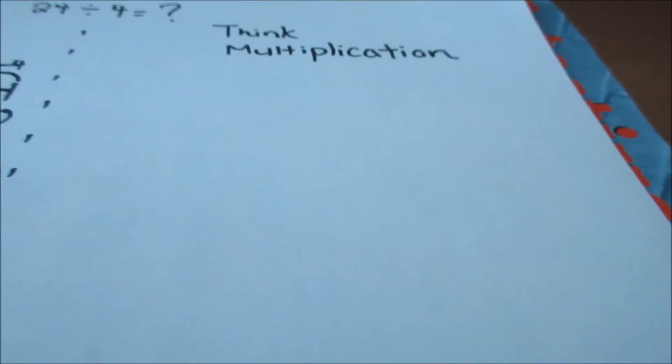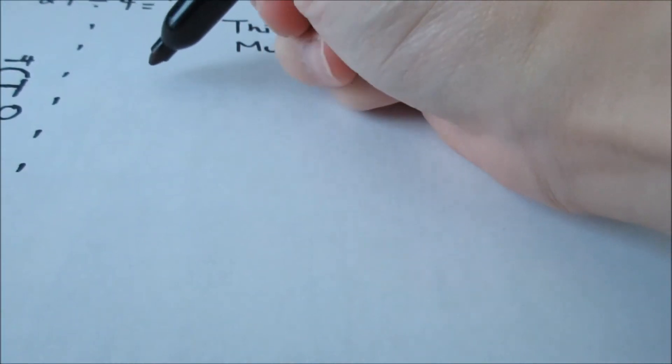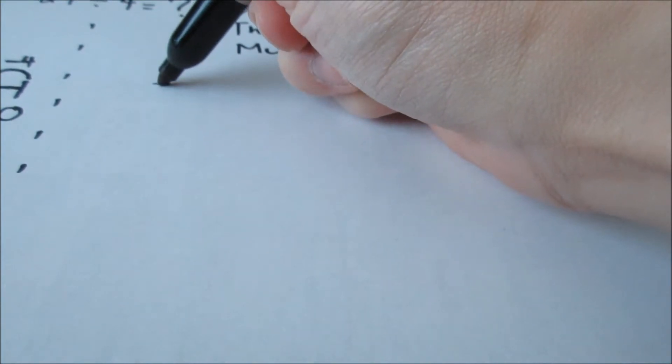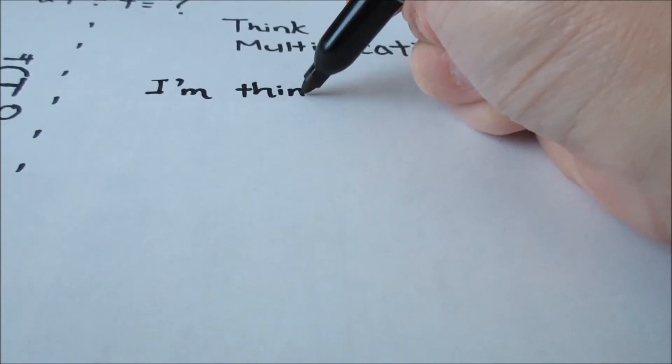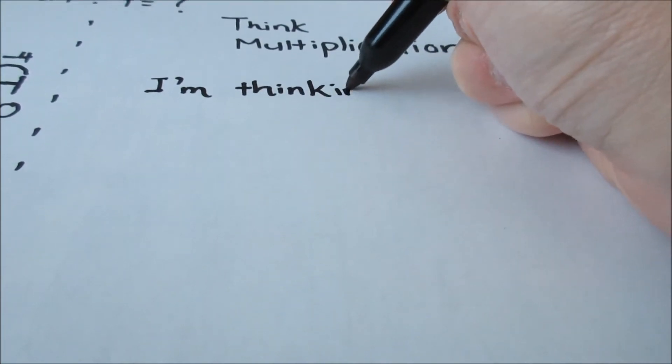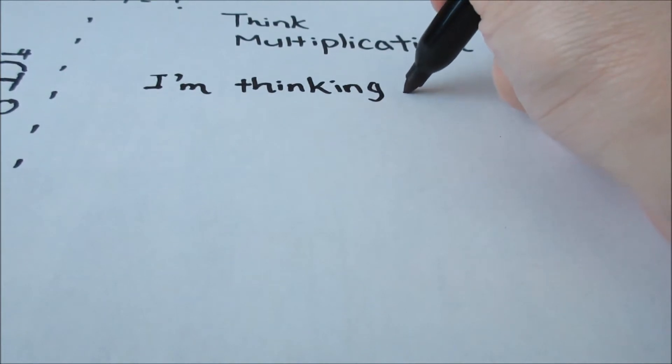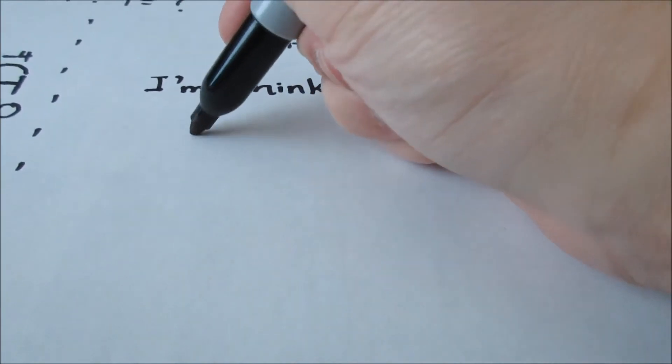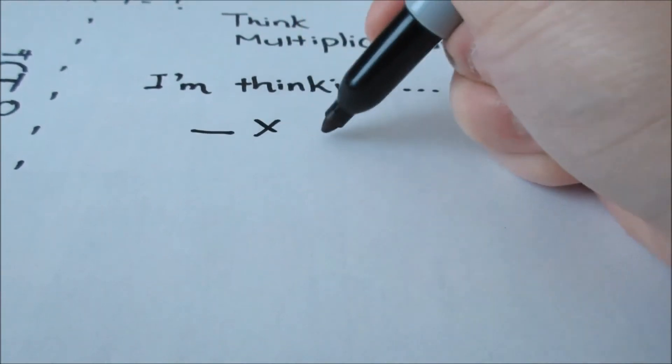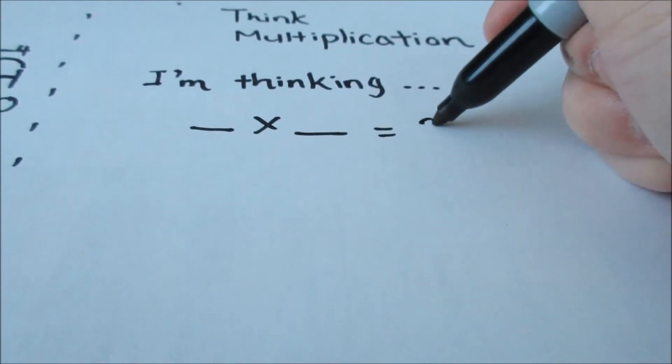Now we're going to look at the strategy, think multiplication, which is kind of like thinking addition. Division is the opposite of multiplication. So for 24 divided by 4, I don't know what that is, so I'm going to use multiplication to help me figure that out because division is the opposite.